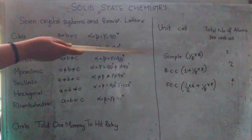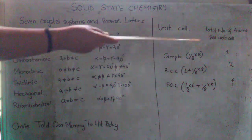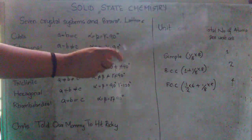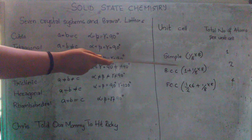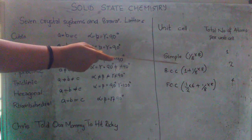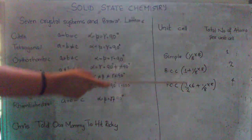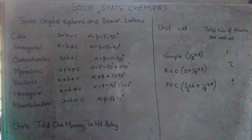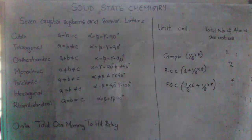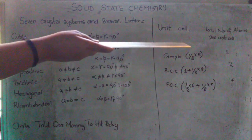Now the next topic will be the unit cells and the total number of atoms per unit cell. In case of simple cubic unit cell, it will be 1. That is 1/8. One particle will be occupying 1/8 position and we are having 8 corners. So 1/8 into 8, 1.